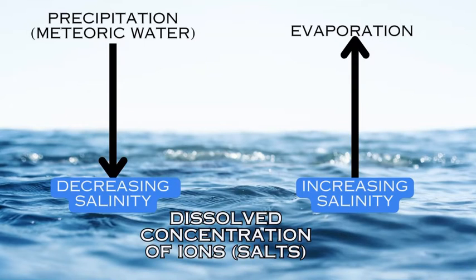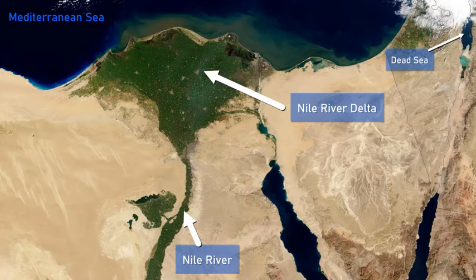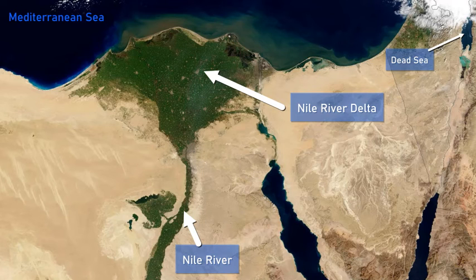Also, if you have high levels of precipitation or a large influx of river water — such as from the Amazon, the Nile, or the Mississippi — you're going to get an influx of fresh water, which would decrease salinity on average around those areas. So salinity is the percentage of dissolved ions within the water, and this can fluctuate throughout ocean basins and different geographic locations based on parameters like evaporation, precipitation, and the influx of river water.